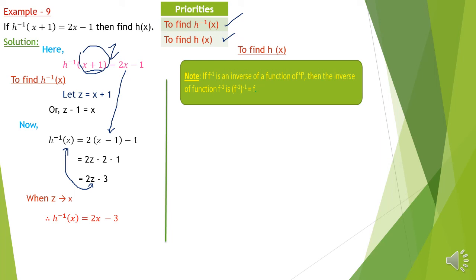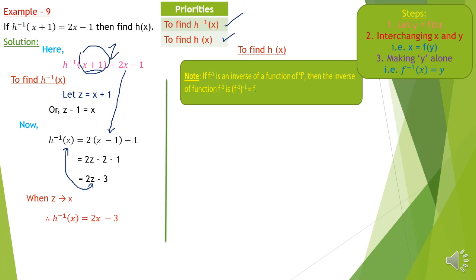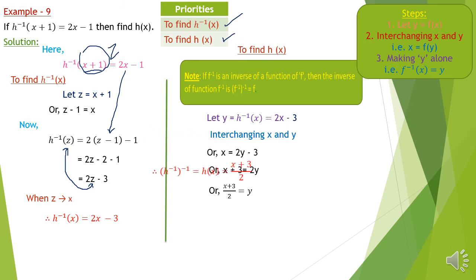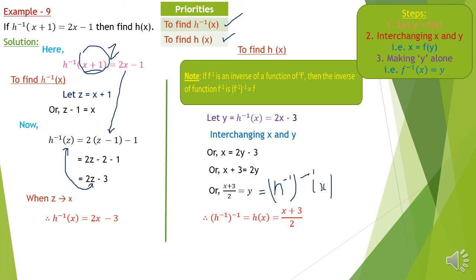The note is: if f⁻¹ is the inverse of f, then the inverse of f⁻¹ is f. So finding the inverse of h⁻¹(x) = 2x−3 using the three steps: let y = 2x−3, interchange x and y: x = 2y−3, making y alone: x+3 = 2y, so y = (x+3)/2. This is the inverse of h⁻¹, which equals h(x). So h(x) = (x+3)/2.